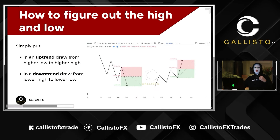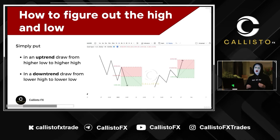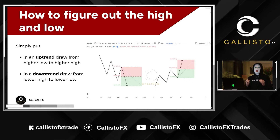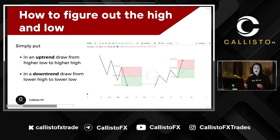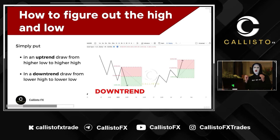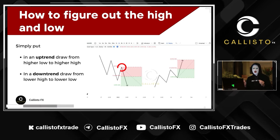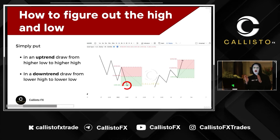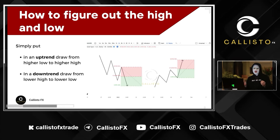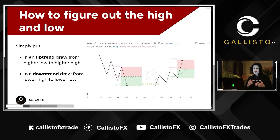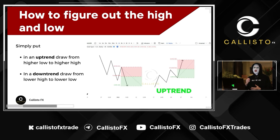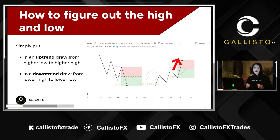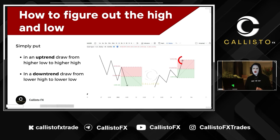Now, you must be asking: how do I identify the swing high or low? It's actually really simple. In a downtrend, you pick out the most recent high that was formed and you just extend it to the low that price has just made. Similarly, in an uptrend, identify the most recent low formed and drag it out to the most recent high formed.